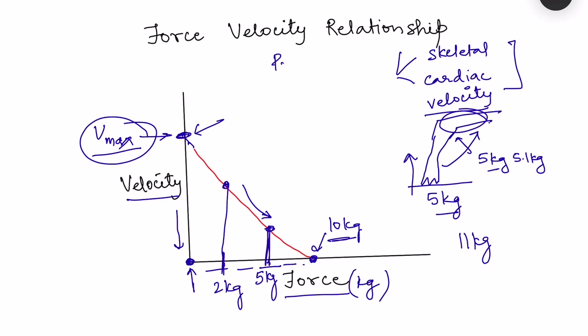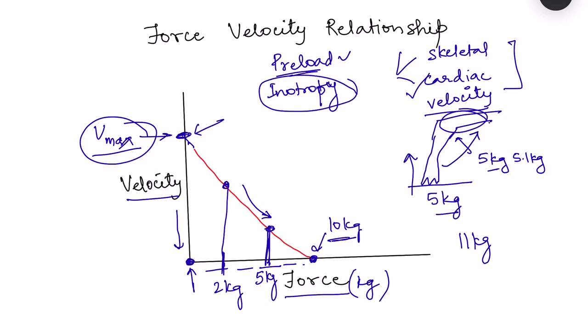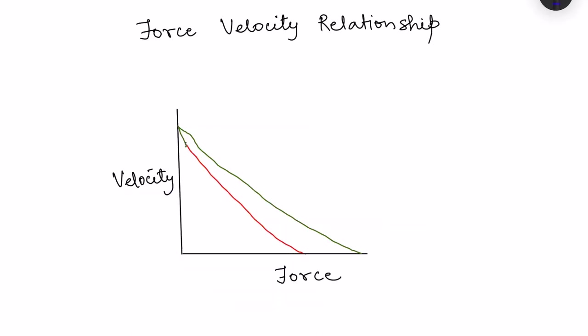This force-velocity relationship can shift — that is, the graph you are seeing will shift based on two factors: preload and inotropy. The concept of preload applies to both skeletal muscle and cardiac muscle; however, the concept of inotropy applies mainly to cardiac muscle. Here we see the force-velocity relationship showing the effect of preload on the graph.